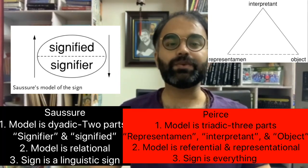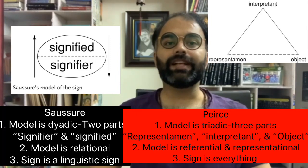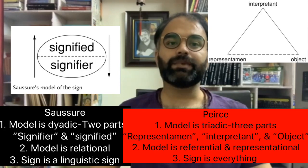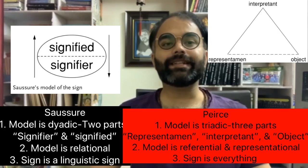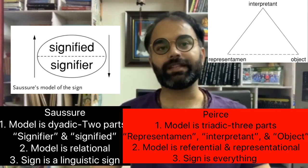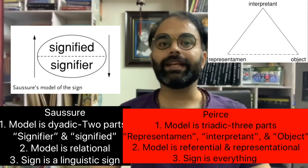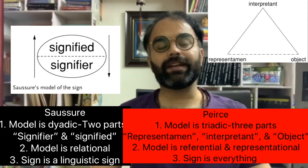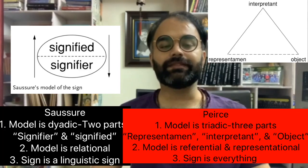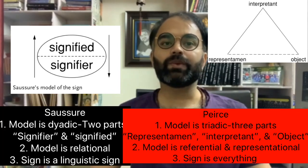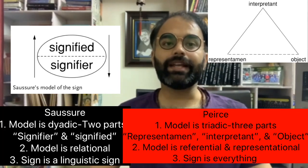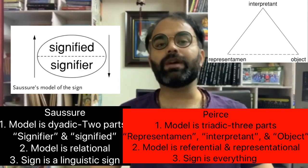Saussure's model is relational, which means one sign interacts with other signs, whereas in Peirce's model, sign is referential and representational — so one sign refers to an object.